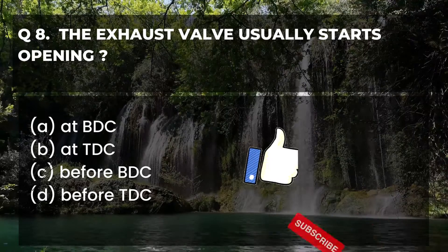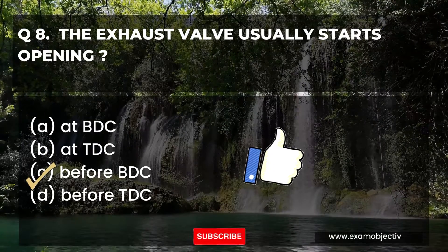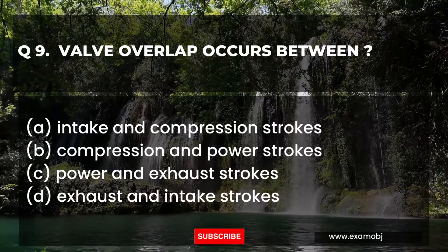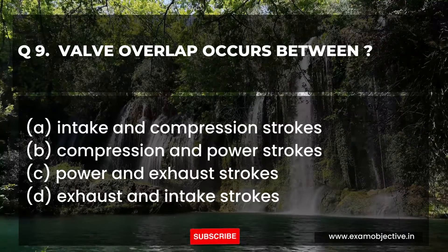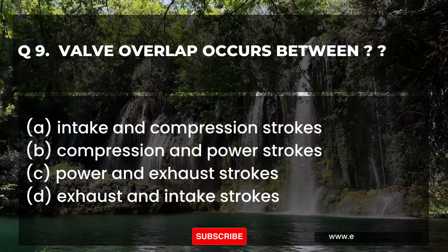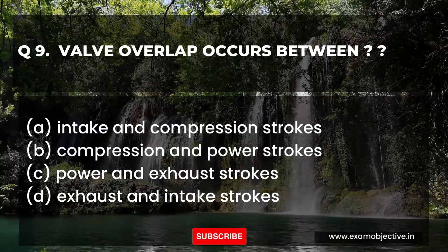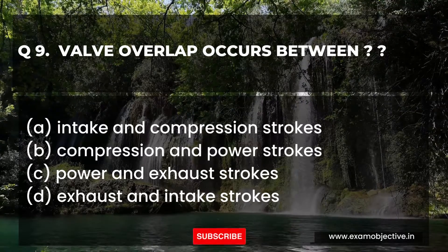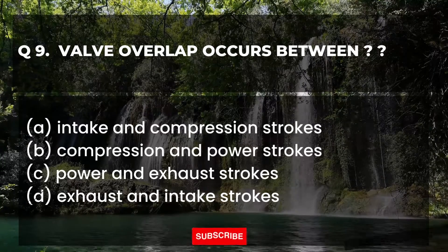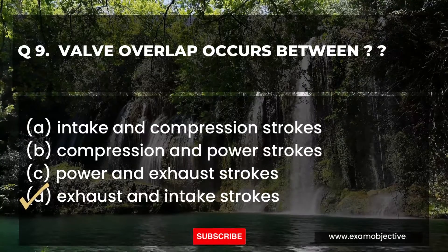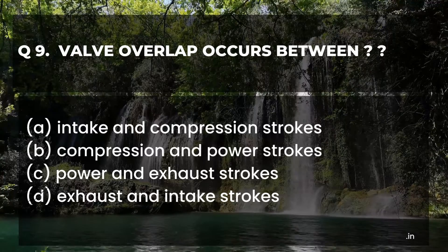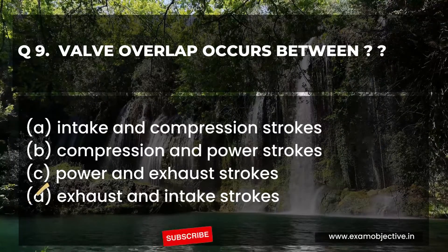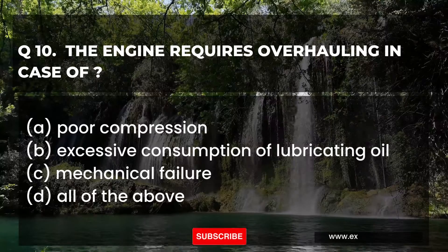Dear students, if you find this useful please subscribe to my channel and hit the bell icon so you can get notifications of new videos, and don't forget to hit the like button. Question number nine: Valve overlap occurs between — option A: intake and compression strokes, B: compression and power strokes, C: power and exhaust strokes, D: exhaust and intake strokes. The answer is option D — exhaust and intake strokes.